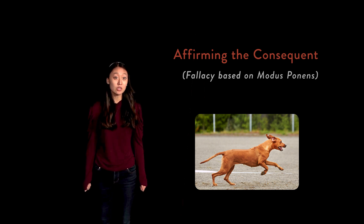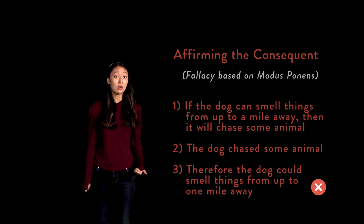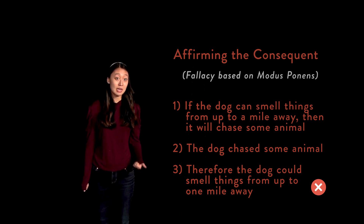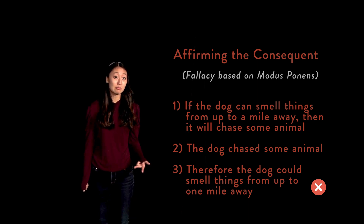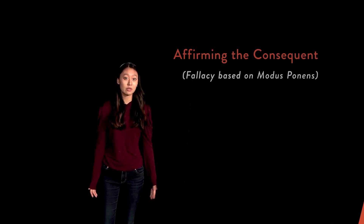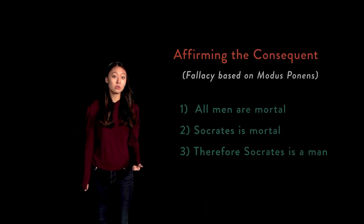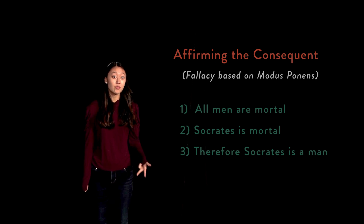To see this more clearly, we can formalize the inference as: 1. If a certain dog can smell things up to one mile away, then it will chase after some animal. 2. The dog goes chasing after some animal. 3. Therefore, the dog must have been able to smell things up to one mile away. Here's the second example: 1. All men are mortal. 2. Socrates is mortal. 3. Therefore, Socrates is a man.